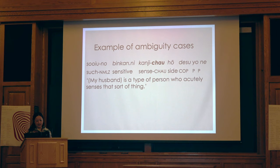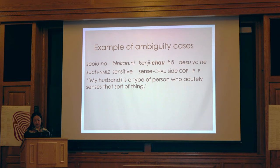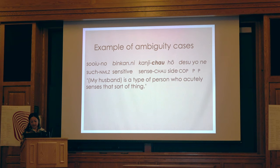Here is one example: 'My husband is the type of person who accurately senses that sort of thing.' The speaker is describing what her husband is like — that he can sense how someone is feeling even when he's just met the person. All three informants identified spontaneity as part of the meaning of chao.